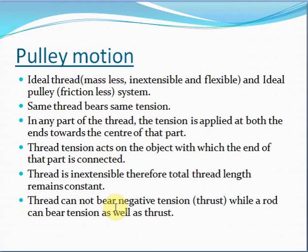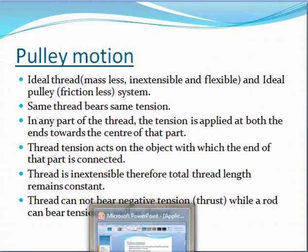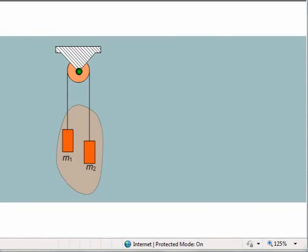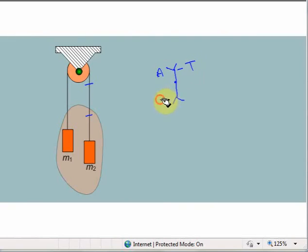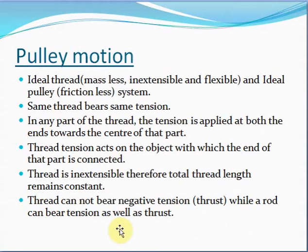In any part of the thread, the tension is applied at both ends and directed towards the center of that part. If we take any part of the thread, a tension will be applied at end A as well as at end B, and the direction of tension will be directly towards the center of this part. So tension T is applied at end A and tension T at end B. Since the same tension runs through the entire thread, the value of tension will be the same, directed towards the center.